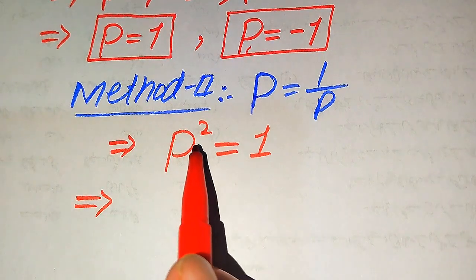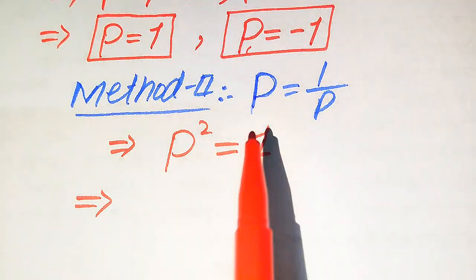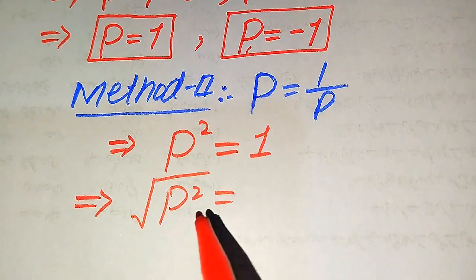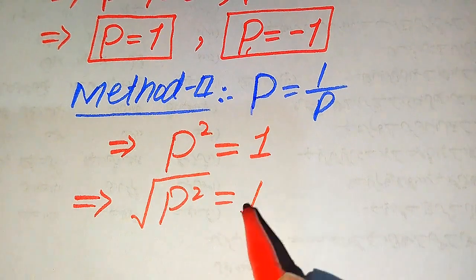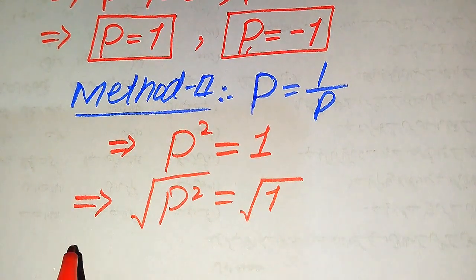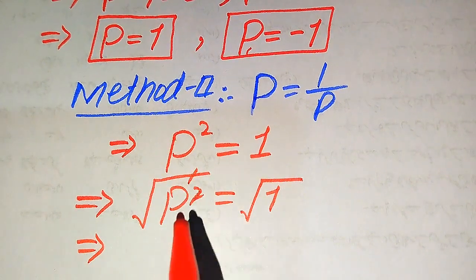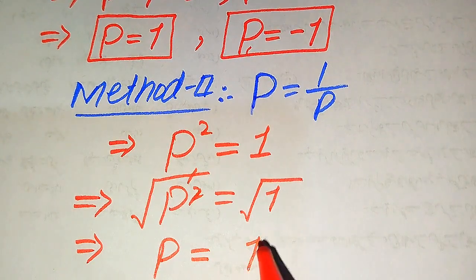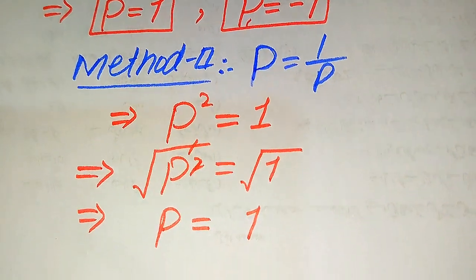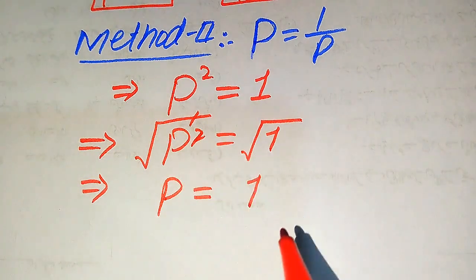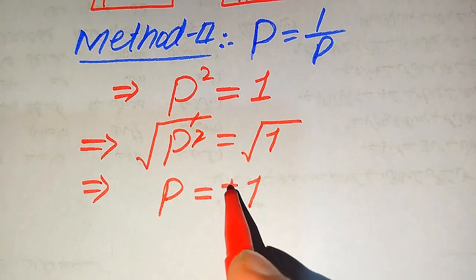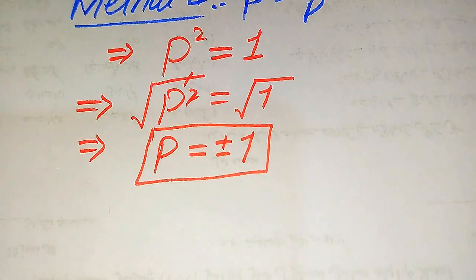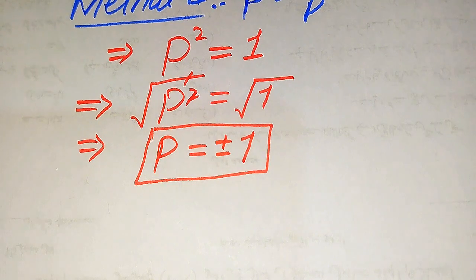To remove the square sign, we apply the square root to both sides. The square root of P squared gives P, and the square root of 1 is 1. When applying the square root, we write a plus-minus sign, giving P equals plus or minus 1. Both methods yield the same roots.